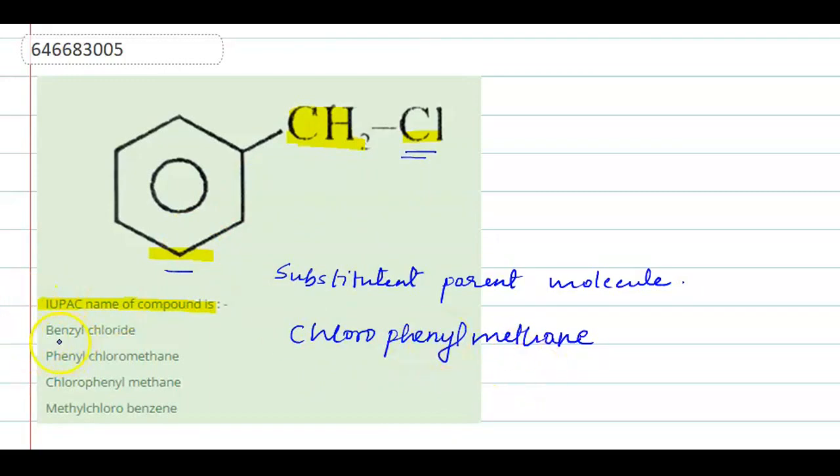Look at the options. Option A: Benzyl chloride - No. Option B: Phenylchloromethane - No. Chloro comes first and after that phenyl. Therefore, Option B is wrong.